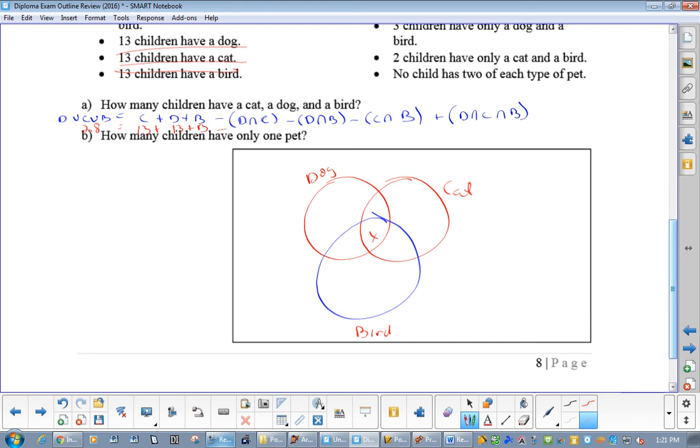4 have only a dog and cat, that's 4. 3 have only a dog and a bird, that's 3. 2 have only a cat and a bird, that's 2. So, how many people have a dog and a cat? That's his football. So, that's 4 plus X. Remember, we put it in brackets. Minus dog and bird is 3 plus X. Minus cat and bird, 2 plus X. Plus dog and cat and bird is X.